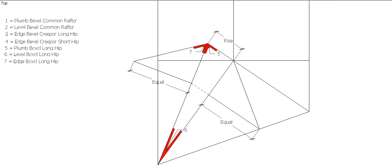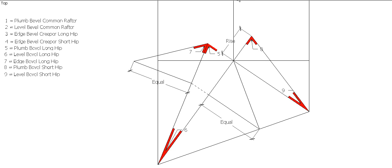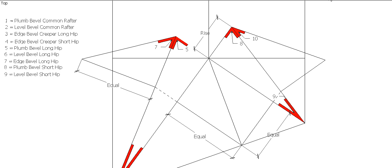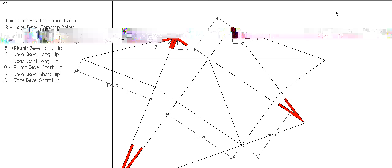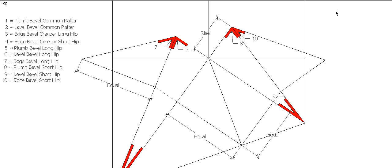Of course we've got two hips, so we repeat the process on the other side for the short hip. Come off 90 degrees, come up our rise, join those two points — that'll give us our plumb bevel and our level bevel for the short hip. Again, to do the edge bevel, come off the plan length at 90 degrees — once again could be anywhere along here as long as it hits the crown end rafter. Fill up that line till it meets the true length, take this distance 90 degrees, and join that back to there — and that will give you the edge bevel for the short hip. So as you can see we're already at 10 bevels and we've only just got the hips done.